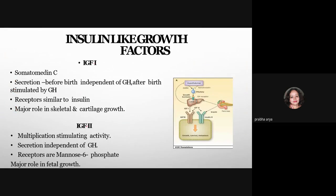There are two main insulin-like growth factors: IGF-1 and IGF-2. Somatomedin C is IGF-1; it is secreted before birth and is initially independent of growth hormone, but after birth it is stimulated by growth hormone. Its receptor mechanism is similar to insulin and its major role is in skeletal and cartilage growth. IGF-2 has multiplication-stimulating activity, its secretion is growth hormone-independent throughout life, and its major role is in fetal growth.